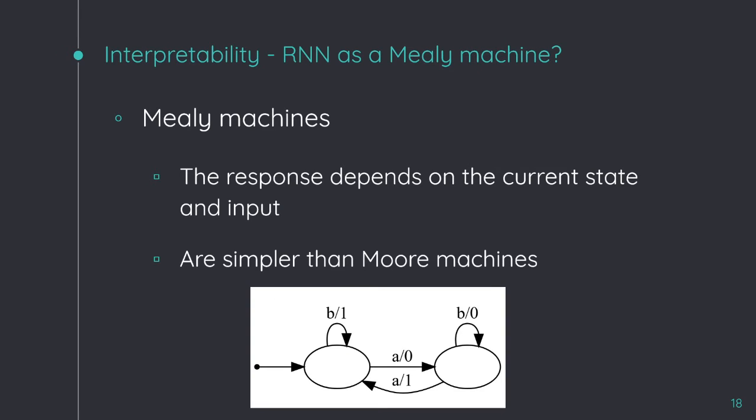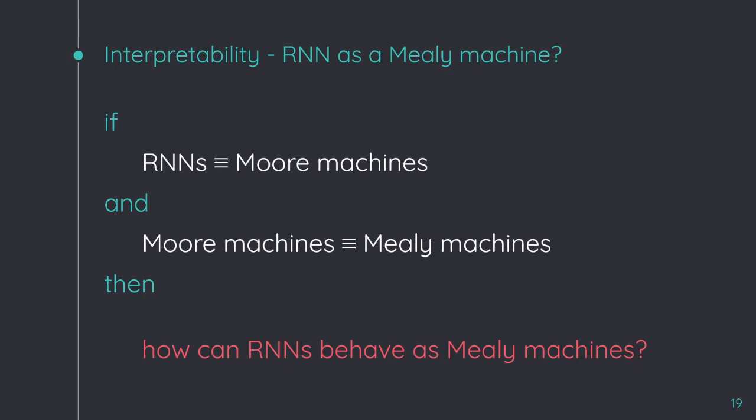With the Gaussian noise technique, we can extract a Moore machine from any recurrent neural network trained on this. But, there exists another equivalent abstract model, the Mealy machine. It is usually simpler than the Moore machine, because this time, the response depends on the current state and also the input. So, the point is, how can a recurrent neural network behave as a Mealy machine?